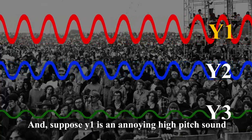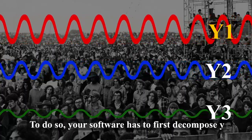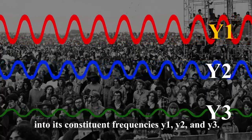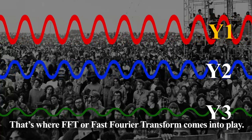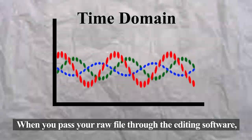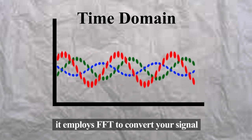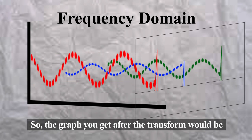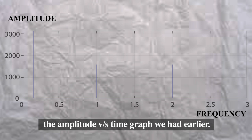Suppose Y1 is an annoying high-pitch sound you want to eliminate. To do so, your software has to first decompose Y into its constituent frequencies Y1, Y2, and Y3 — and that's where FFT, or the Fast Fourier Transform, comes into play. When you pass your raw file through the editing software, it employs FFT to convert your signal from a time domain to a frequency domain. The graph you get after the transform would be an amplitude versus frequency graph, as opposed to the amplitude versus time graph we had earlier.